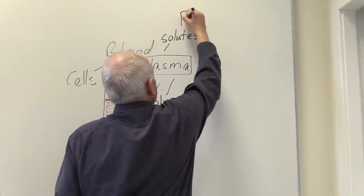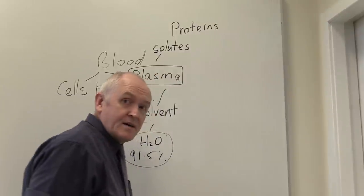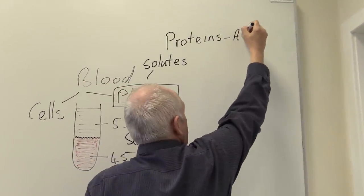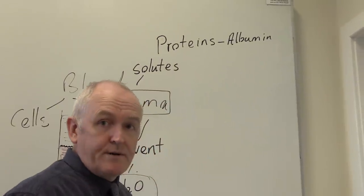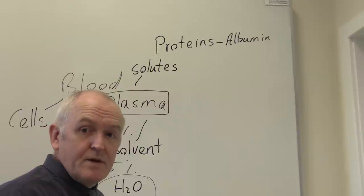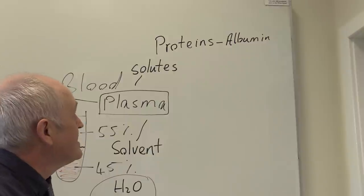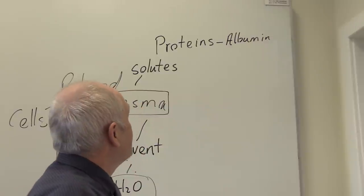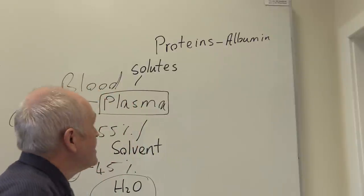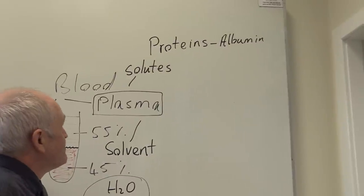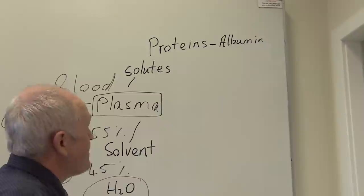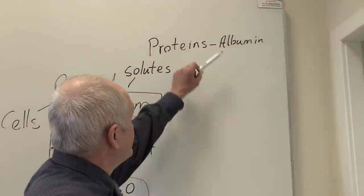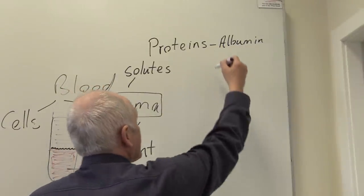The first solutes we can mention are the plasma proteins. Proteins are large molecules. For example, we have albumin, which is the most common and most ubiquitous protein in the plasma. It has a large molecular weight, so it is very osmotically active — it generates osmotic pressure. The proportion of osmotic pressure generated by plasma proteins is referred to as the oncotic pressure.